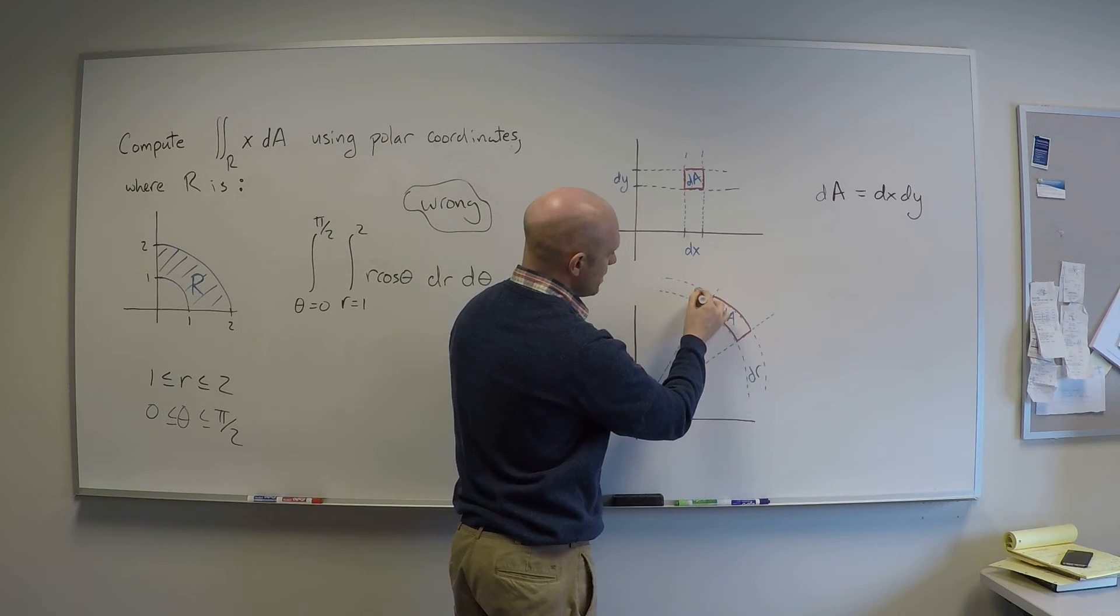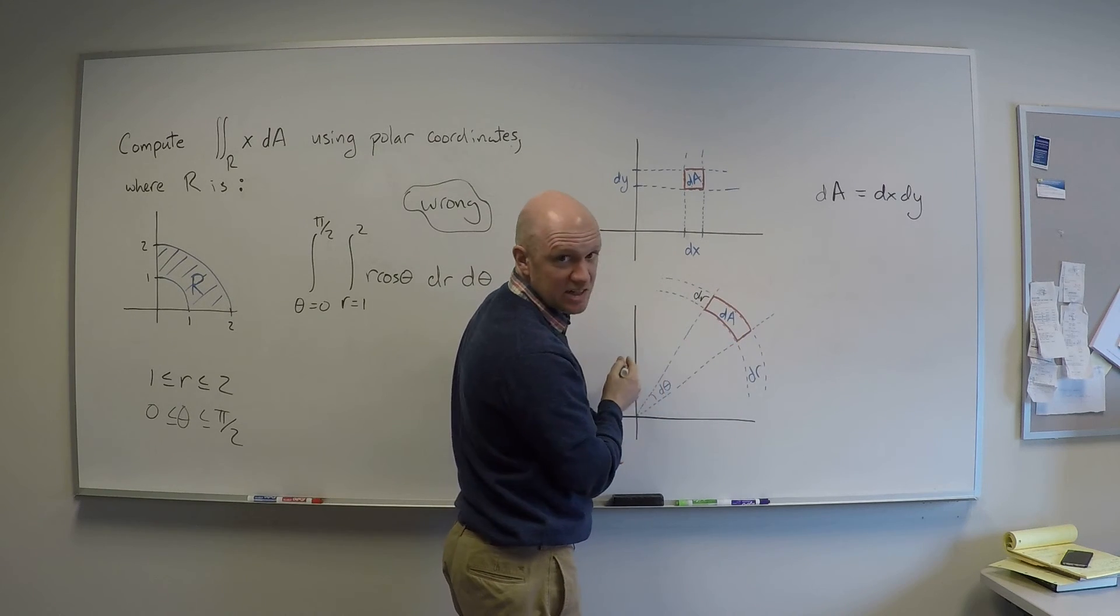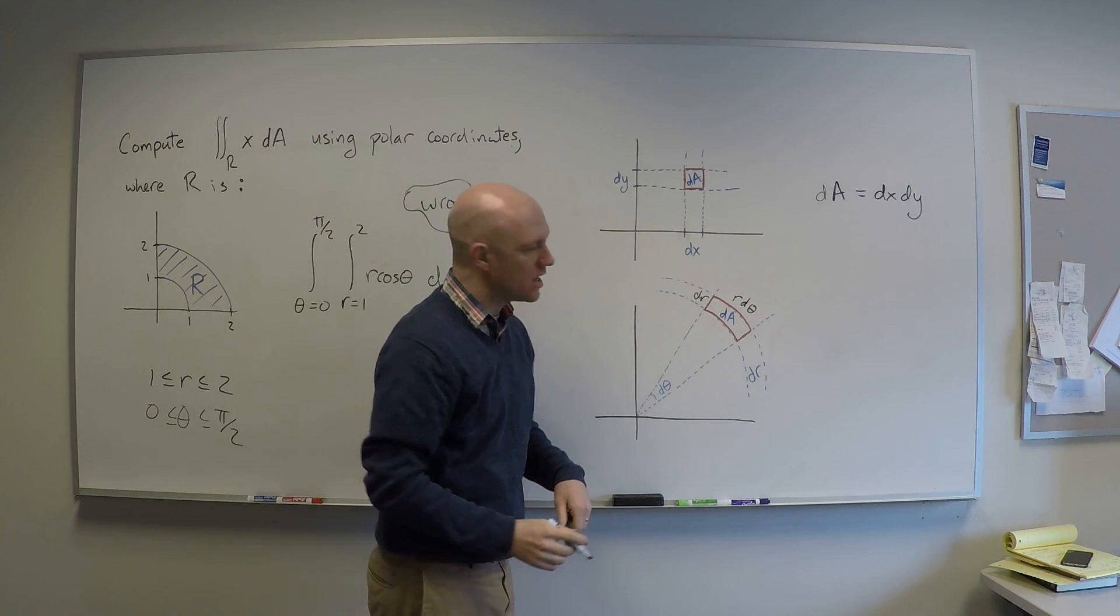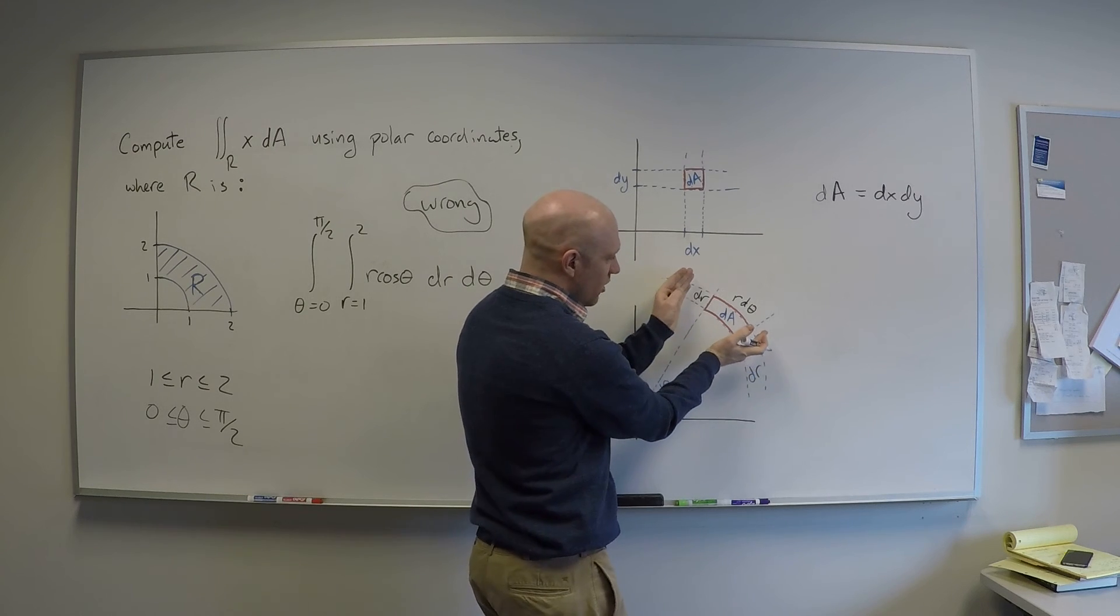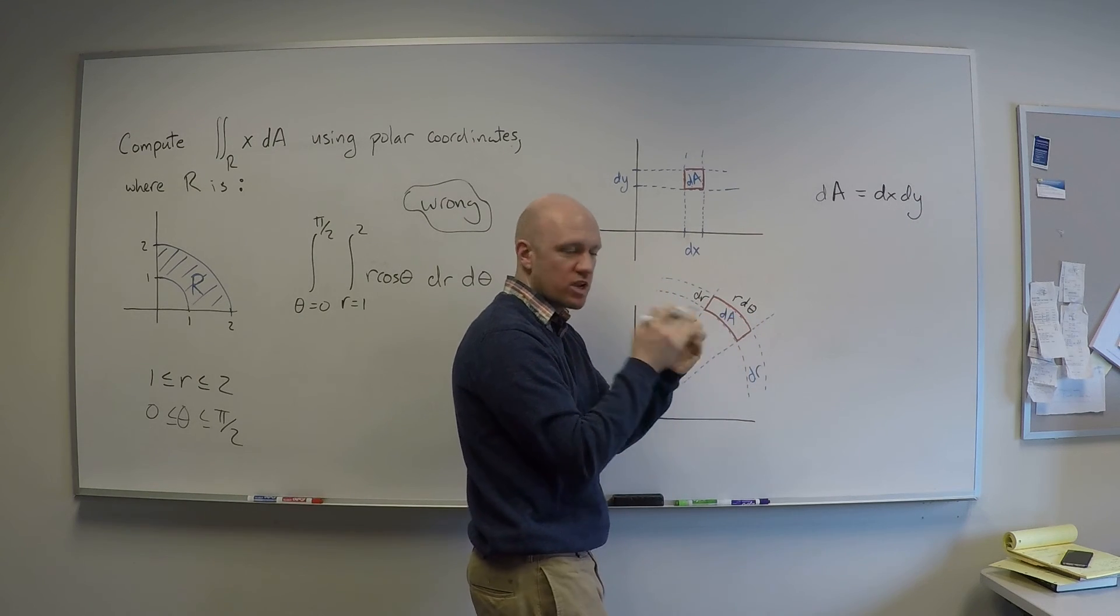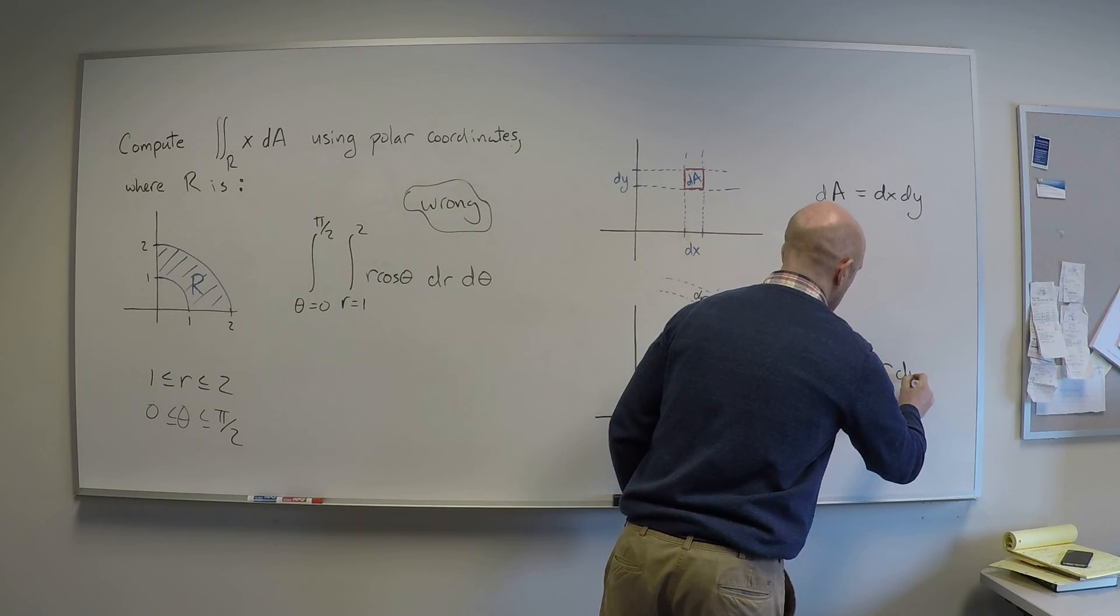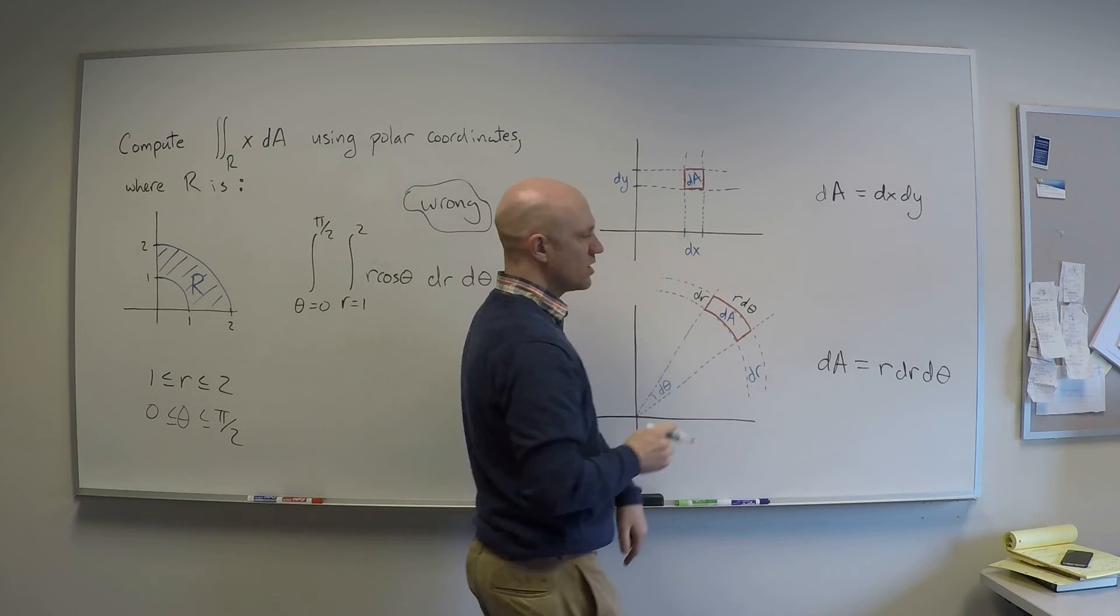Well this wiggle right here is dr. This wiggle, corresponding to the wiggle in theta, is r d theta. And so assuming this is approximately a box, which is not quite, but again this is an infinitesimal thing, so all of these curved lines become straight as we shrink everything down. dA is actually r dr d theta. It's dr times r d theta.